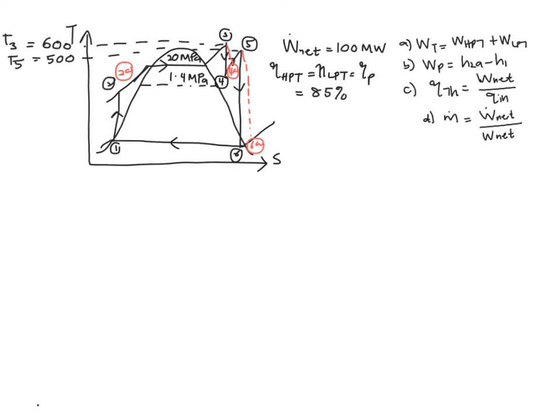So now let's chart down all the values that you have obtained, which is H1 equals 251.42 kJ per kg. Your H2A,